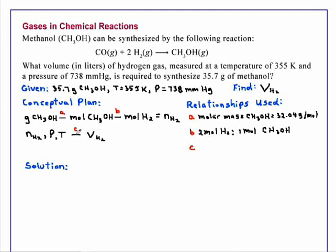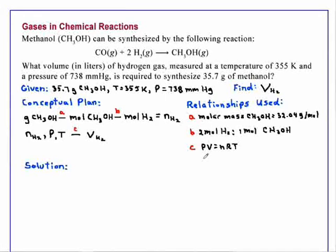And finally, the relationship needed to convert moles to liters is the ideal gas law, PV equals nRT, for which we know that R is equal to 0.08206 liter atmosphere per mole K.